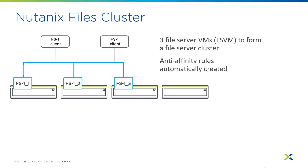The file server is made up of file server virtual machines, also called FSVMs. You can create a file server instance on a Nutanix cluster of any size. If you have a three node physical cluster or larger, they'll typically start with at least three FSVMs. Affinity rules are applied to ensure the file server VMs run on separate nodes of a cluster.